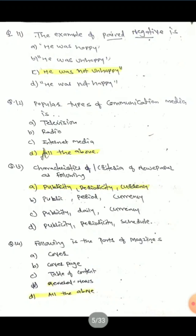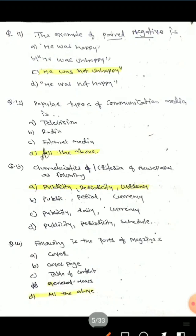Question 12: The characteristics or criteria of a newspaper from the following. Options are: A) Publicity, Periodicity, Currency; B) Public, Period, Currency; C) Publicity, Daily, Currency; D) Publicity, Periodicity, Schedule. The correct answer is A — Publicity, Periodicity, and Currency.